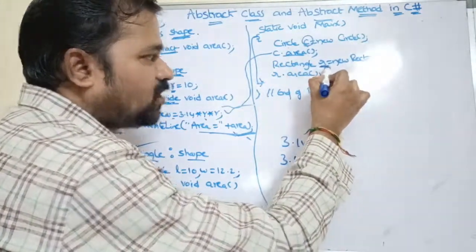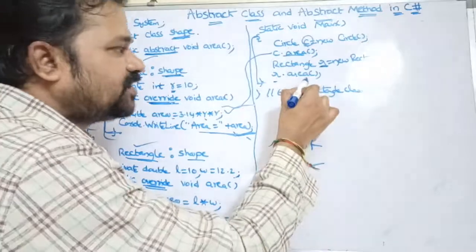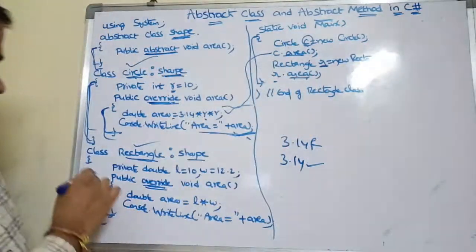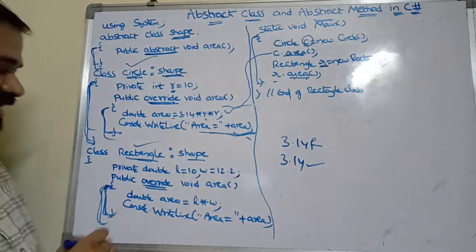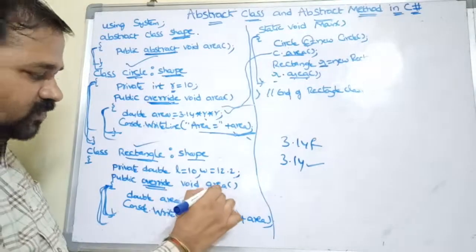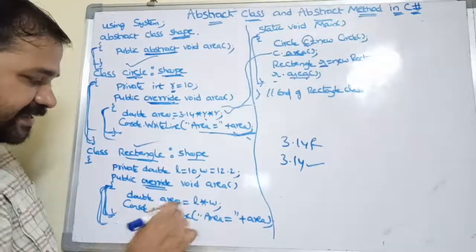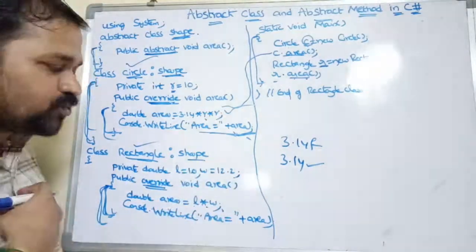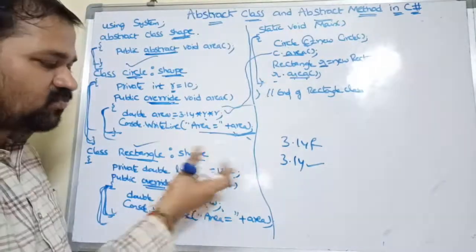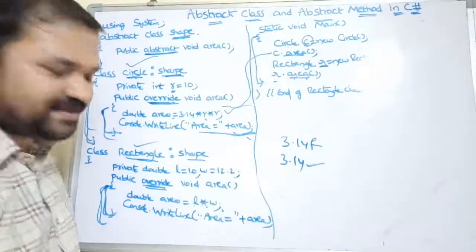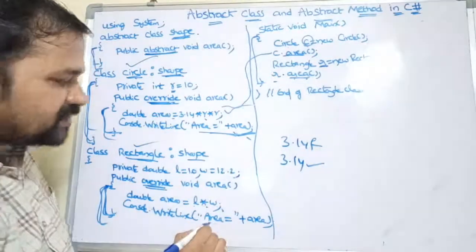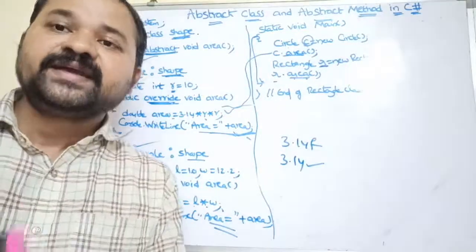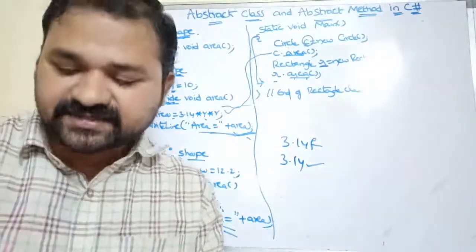Next, an object is created for the Rectangle class, with object name r. Then r.Area() is called — control goes to the Area method defined in Rectangle class. The body calculates area = length * width, so 10 * 1.10, giving a value of around 11.0, and that value is printed. This completes the demonstration of abstract methods and abstract classes in C#.